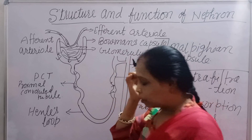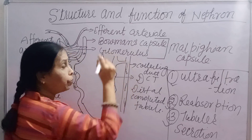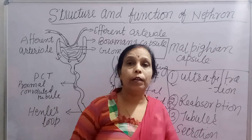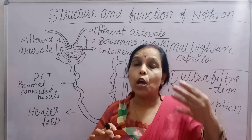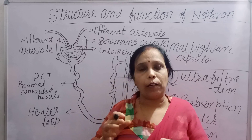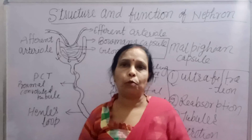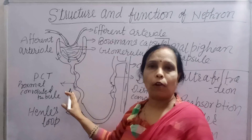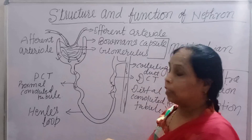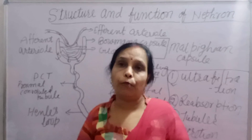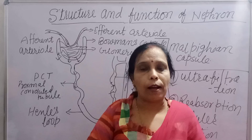The urine then passes into the collecting duct. From there it goes to the kidney pelvis, then to the urinary bladder, and finally out through the urinary outlet. This completes our understanding of the structure and function of the nephron, and the function of the kidney — the urine formation process.